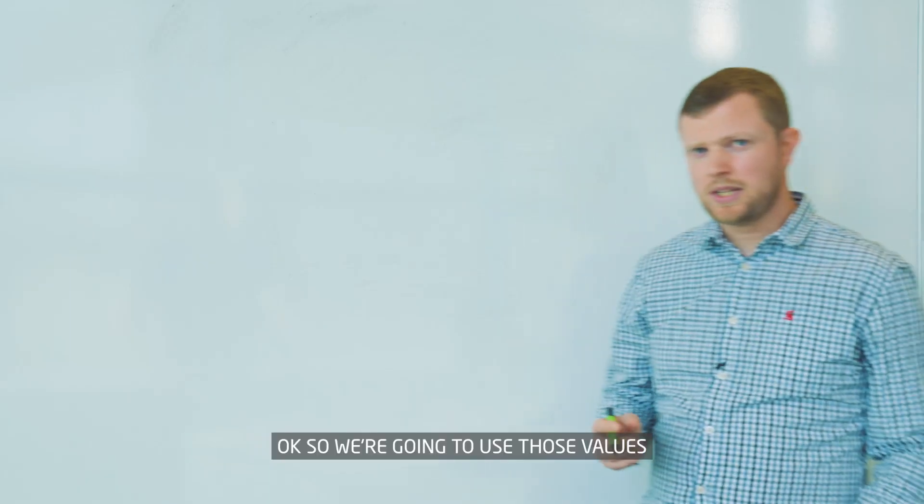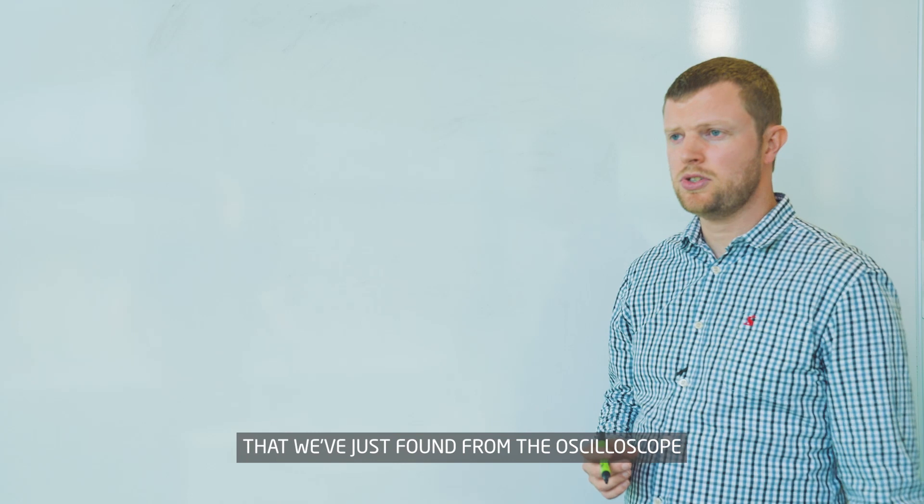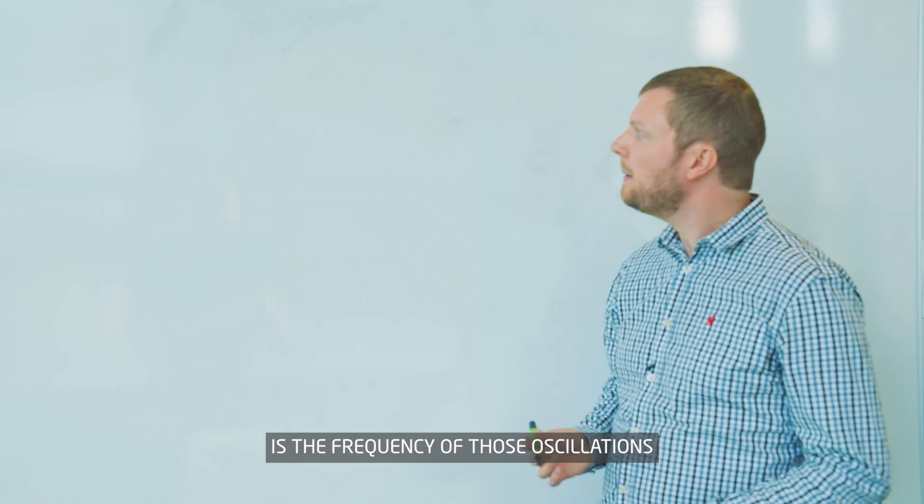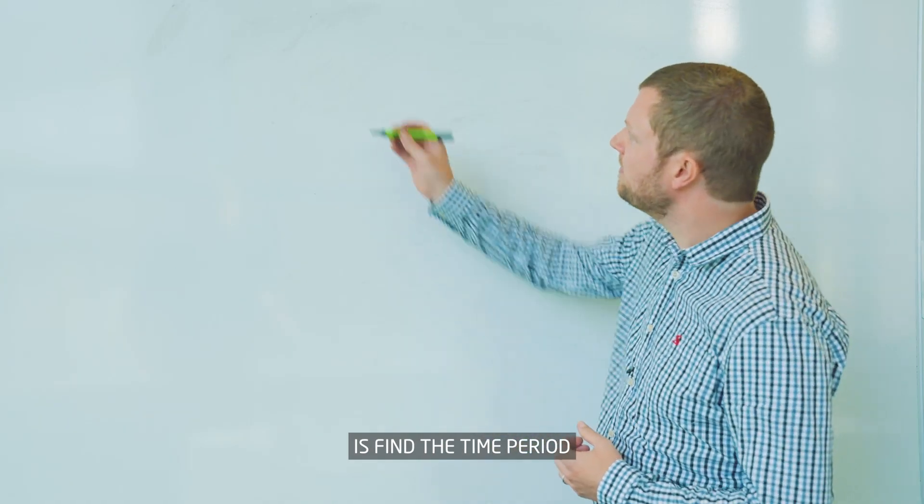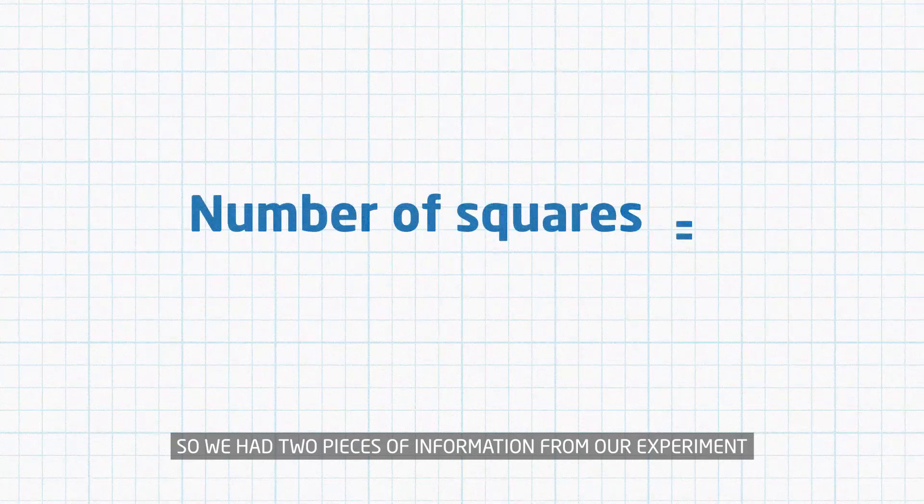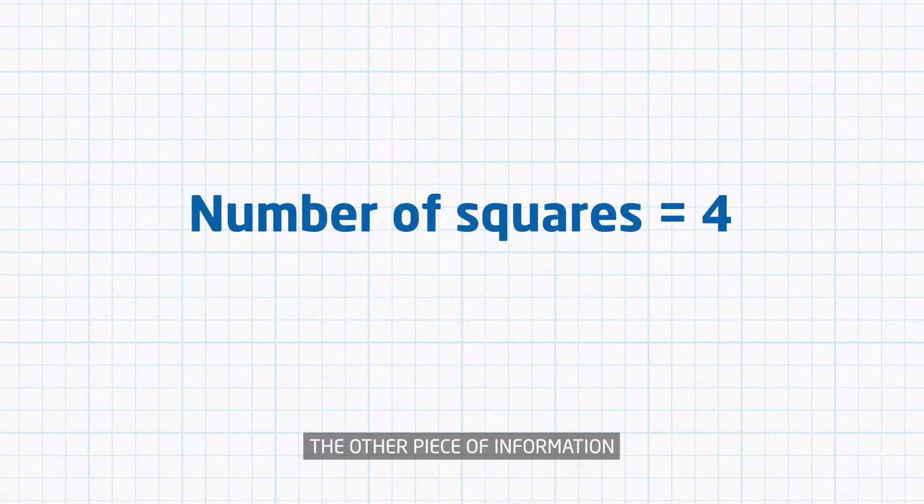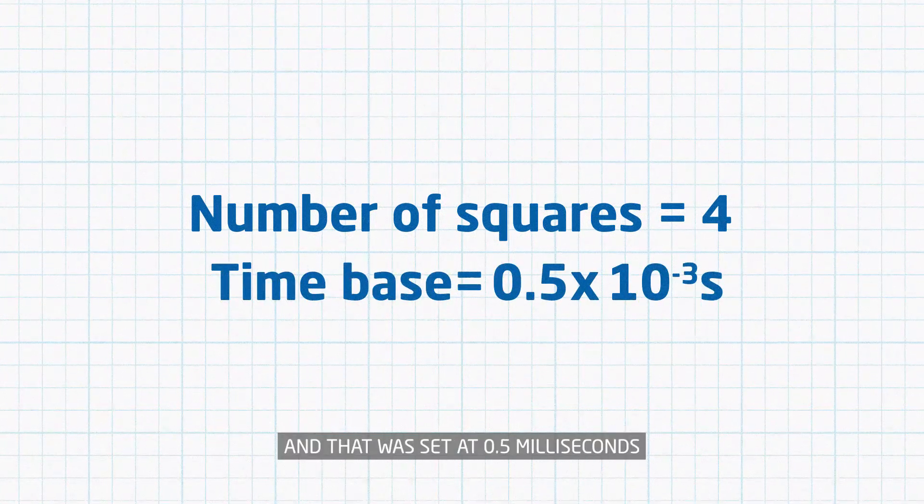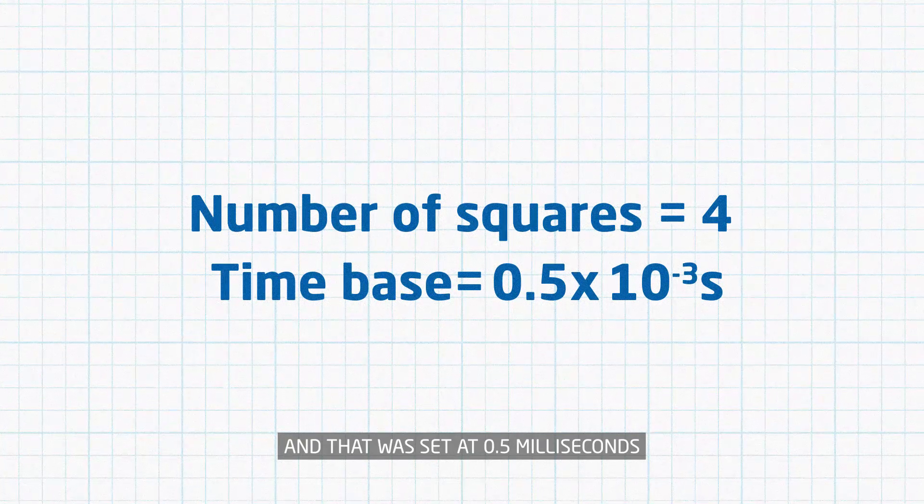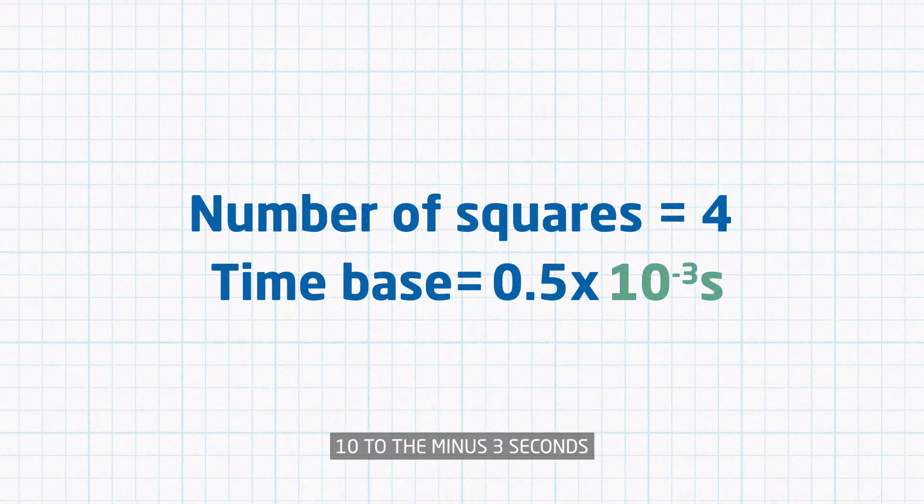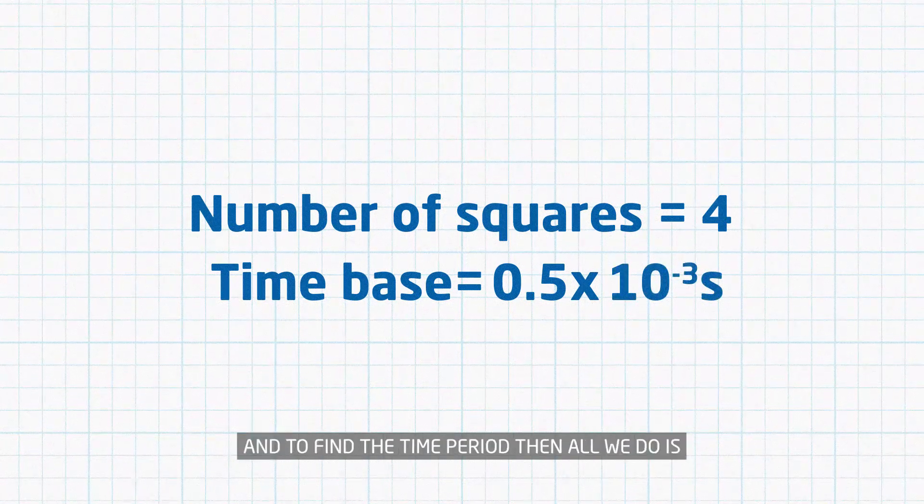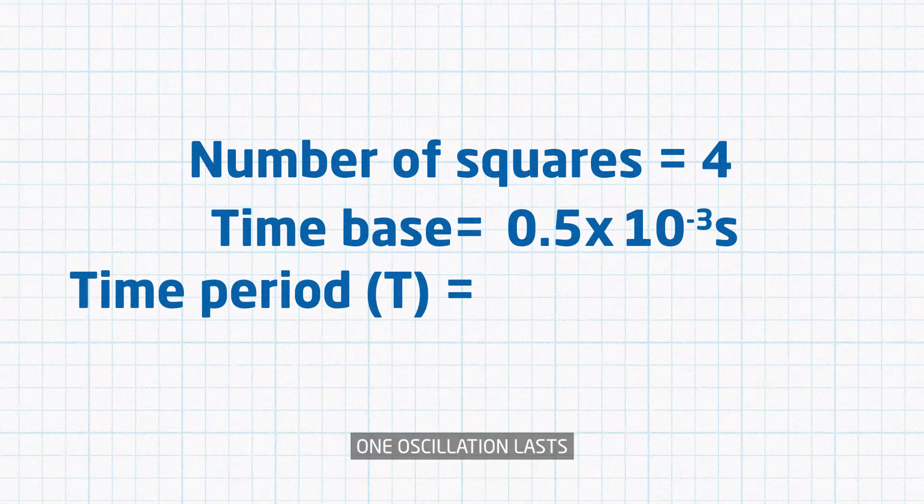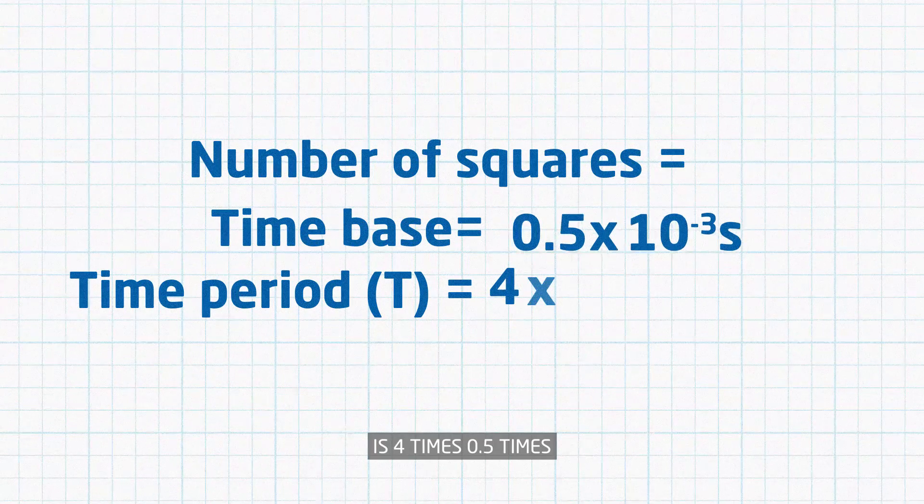We're going to use those values from the oscilloscope to do some calculations. What we're trying to find is the frequency of those oscillations. The first thing we need to do is find the time period. We had the number of squares equal to 4, and the time base was 0.5 milliseconds, so 0.5 times 10 to the minus 3 seconds. To find the time period, we multiply those values together, so the time period is 4 times 0.5 times 10 to the minus 3, which is 2 times 10 to the minus 3 seconds.